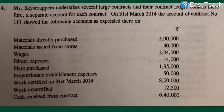This is a construction company with a separate account for each contract. We are going to look at the information as of 31st March 2014, which is the year-end date. The contract number is 111.